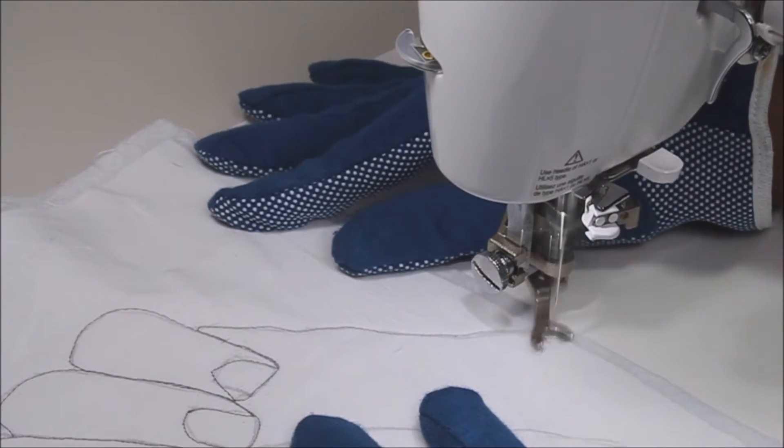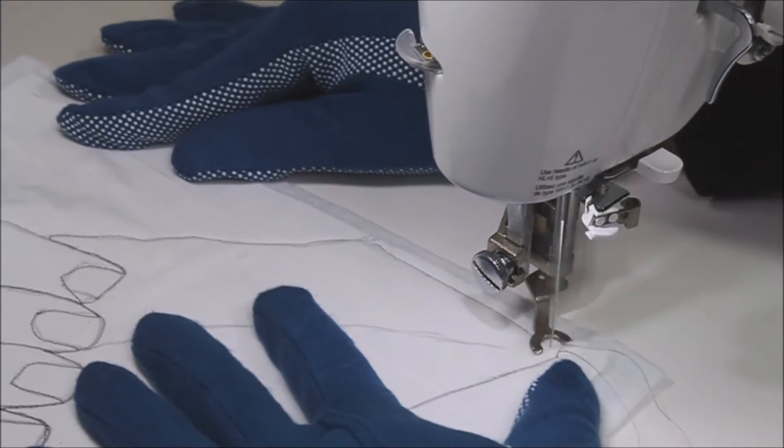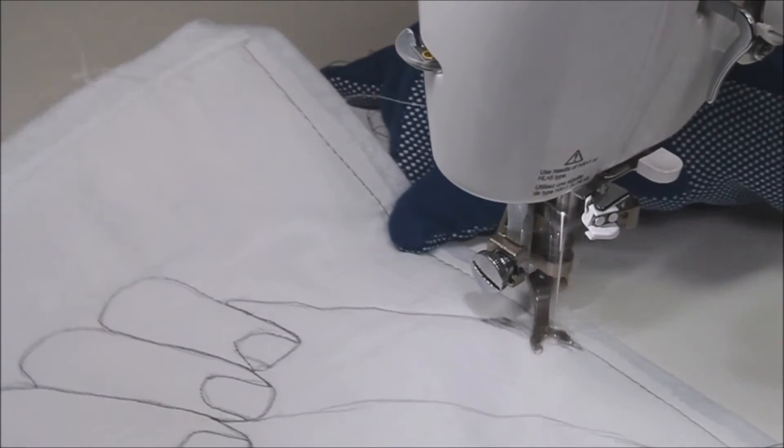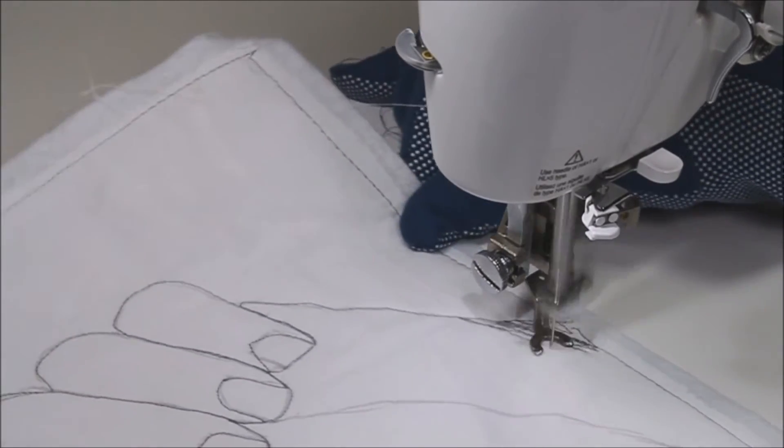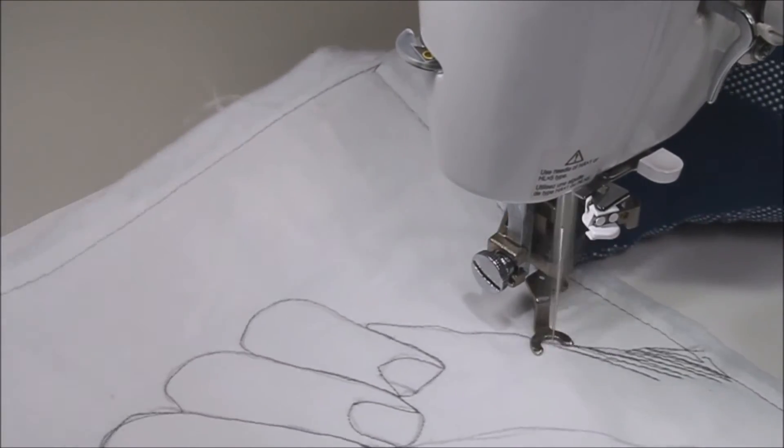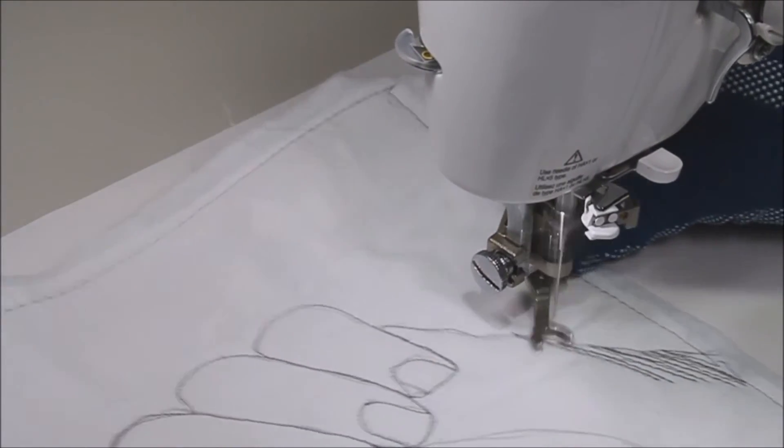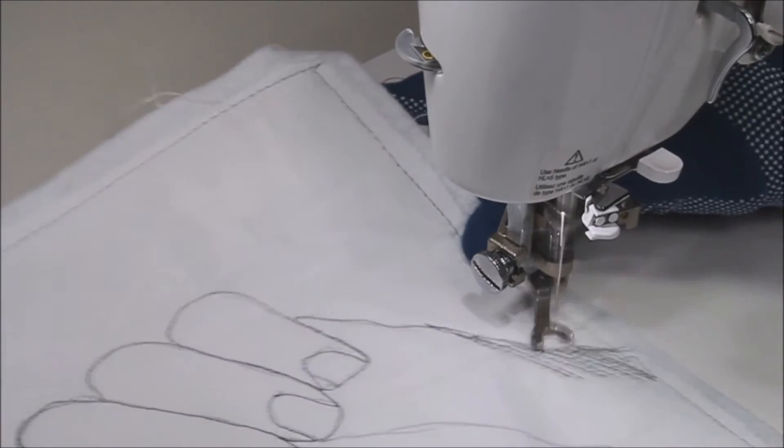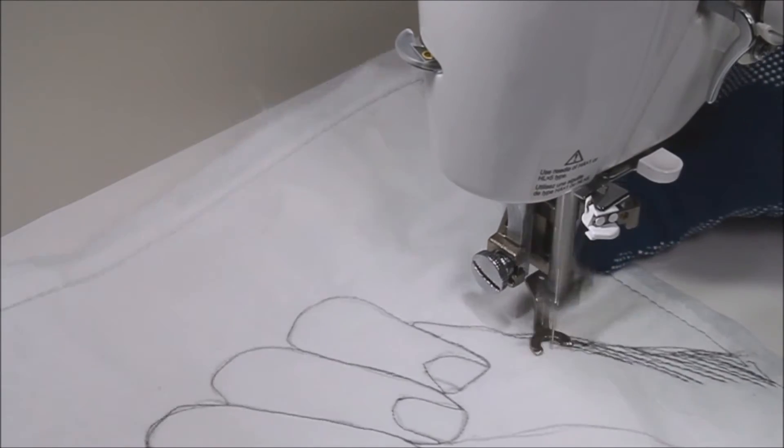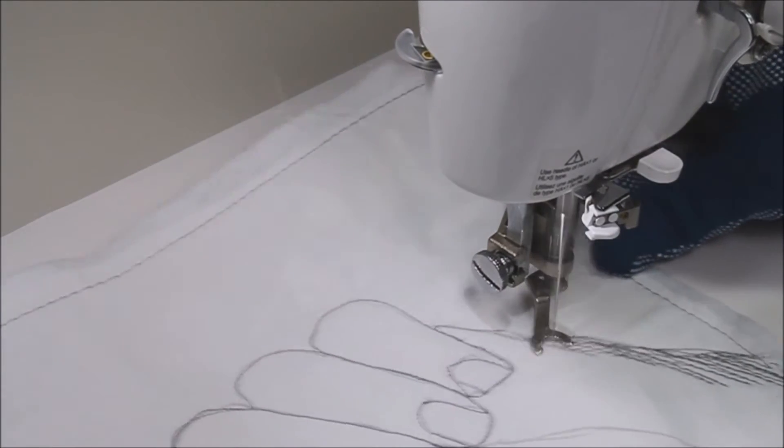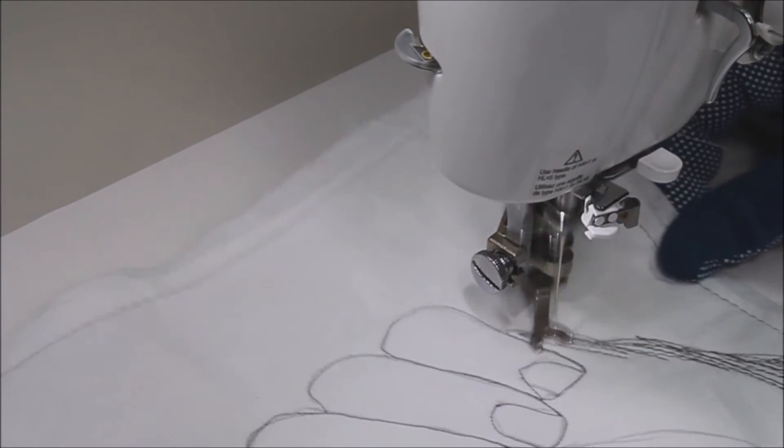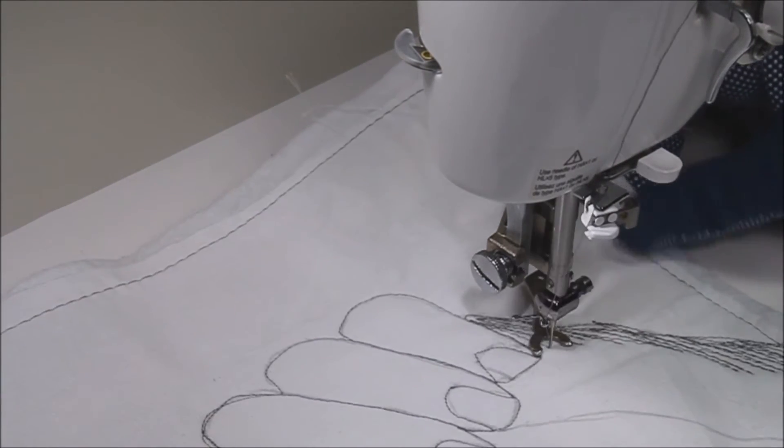Now I'm done with the outline and I'm going to add some shading to the outline. Shading with thread is going back and forth and drawing lines with your stitches. Depending on how dark or light you want the shading to be, you can make your stitch lines close together or far apart. Close together will give you dark shading and farther apart will give you light shading.